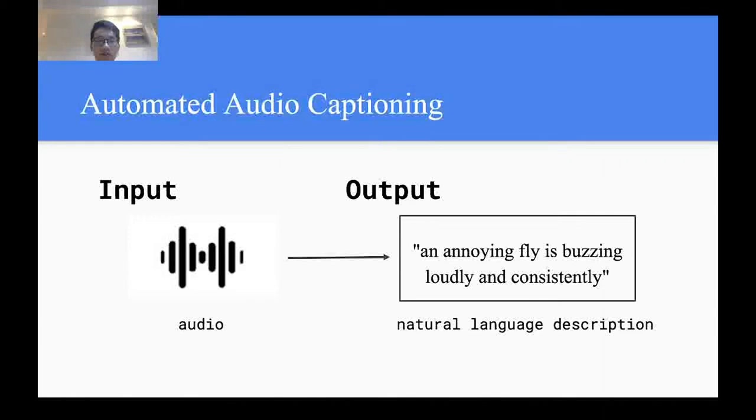This is a new task in the field of audio signal processing and understanding. A general audio is taken as the input, and the output is a natural language description of this audio. For example, an annoying fly is buzzing loudly and consistently.